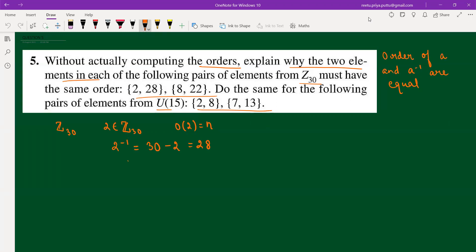So now you get it, why 2 inverse is 28. This implies that order of 2 is equals to order of 2 inverse, which is equals to order of 28. So order of 2 is equals to order of 28.